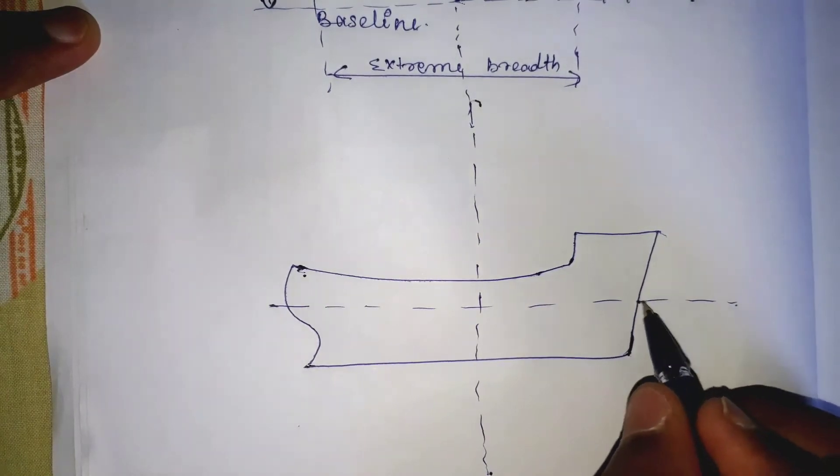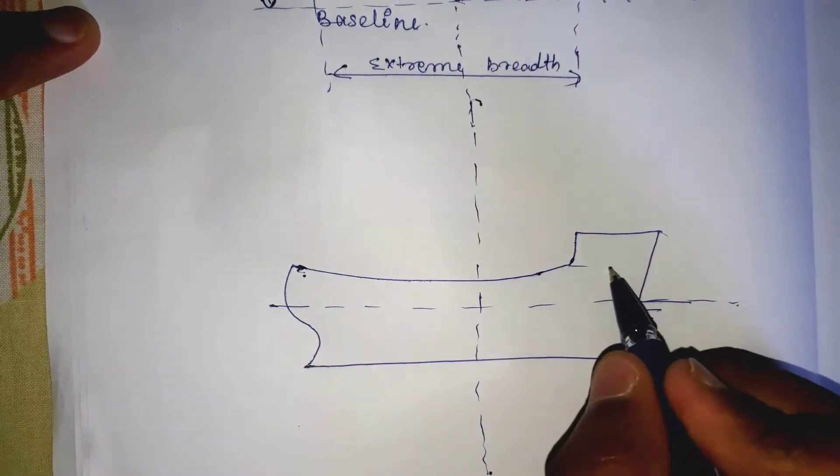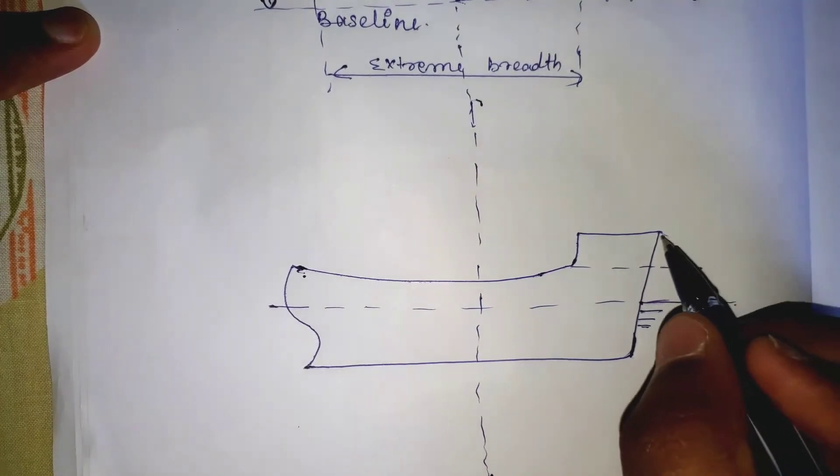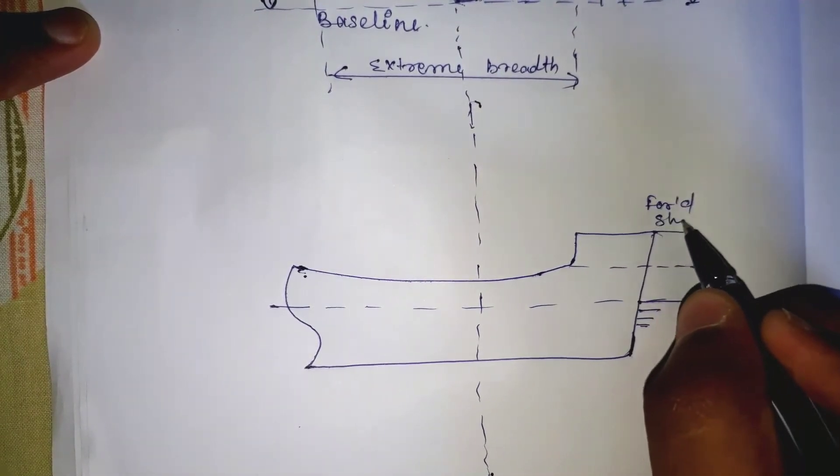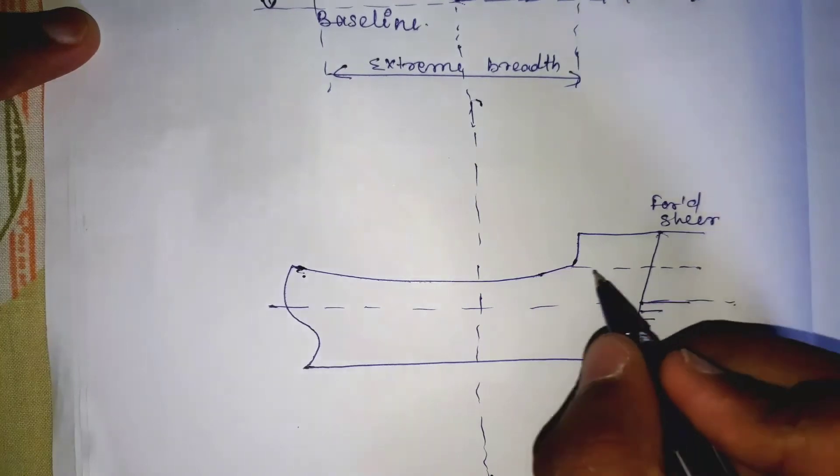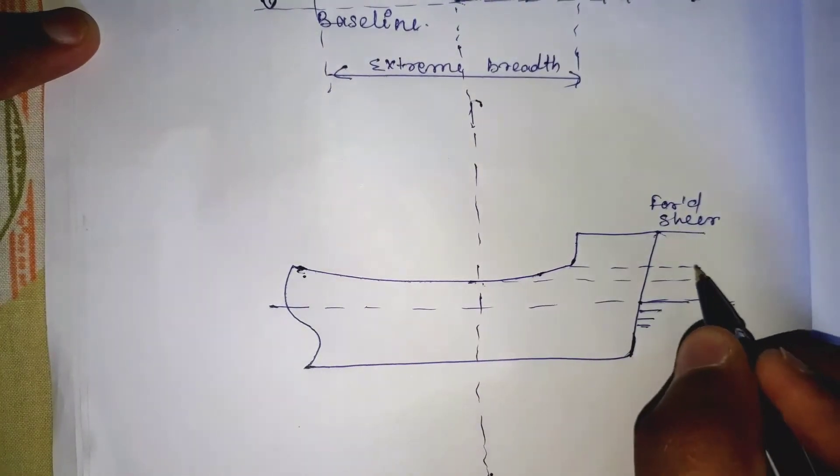and if it is outside, it is known as extreme breadth. Now comes another point, that is shear. This is the curvature of the deck in the fore and aft direction. It is measured as the height of the deck at various points above the height of the deck at the midship point.